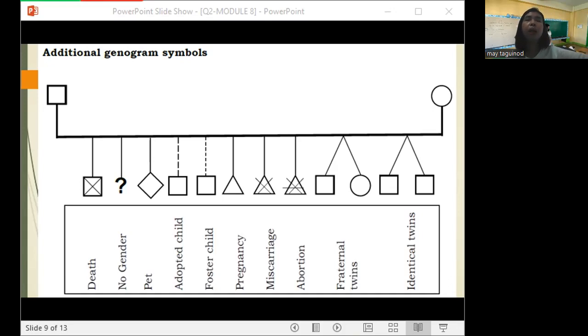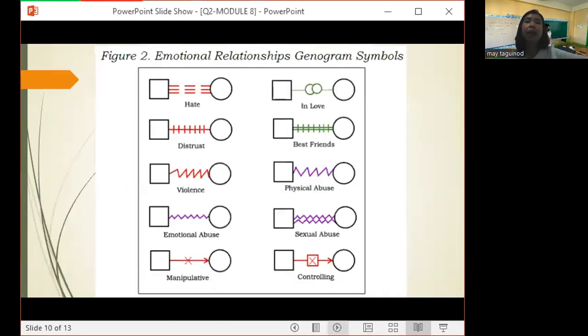When we say identical twins or monozygotic twins, they develop into two babies with exactly the same genetic information. So as in, magkamukha-mukha sila. For fraternal or dizygotic twins, they produce two genetically unique children. It can be one girl and a boy, pero sila ay twins. Usually, hindi masyado lang magkamukha. So that is the difference between fraternal and identical twins.